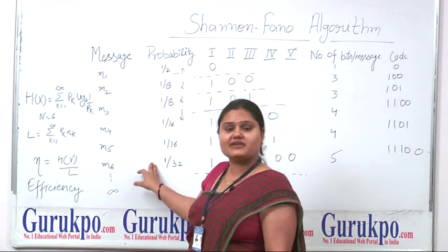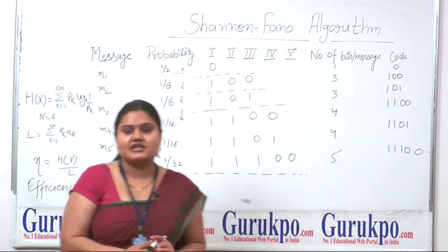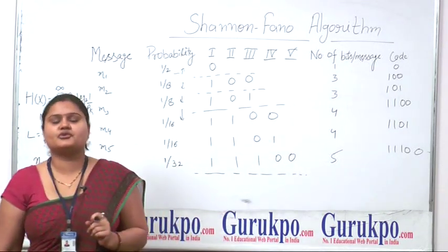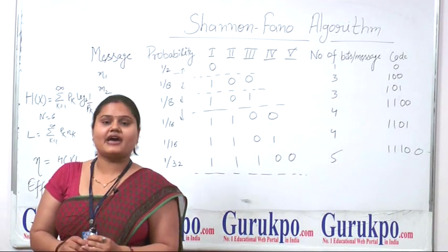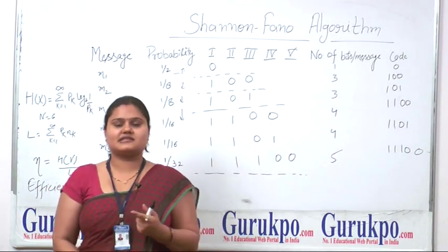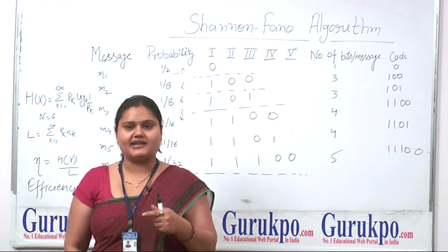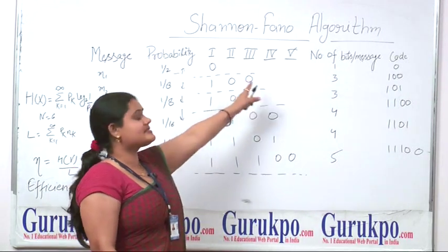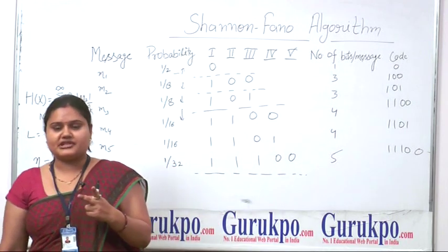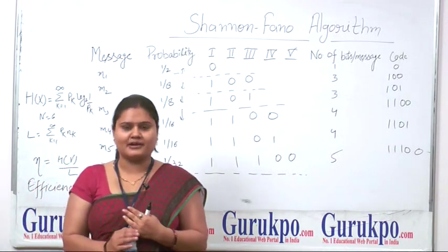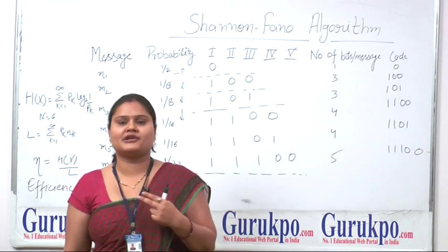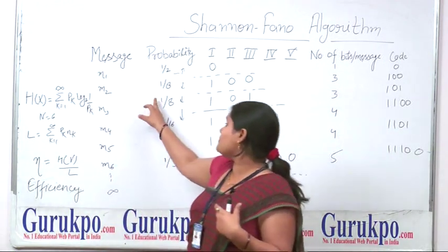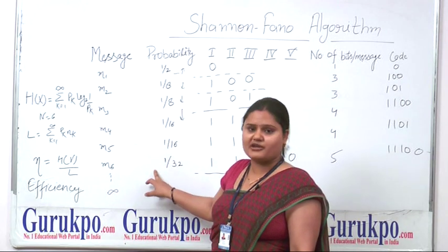Here we have already arranged the probabilities. The next coding step is to check the probabilities count according to the algorithm. If there are N numbers of message signals, we partition them such that the number of divisions is N minus 1. Here we are discussing 6 signals, so the maximum divisions should be in the 5th column. The probabilities are 1/2, 1/8, 1/8, 1/16, and 1/32.